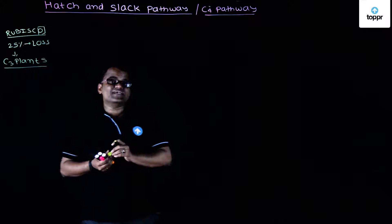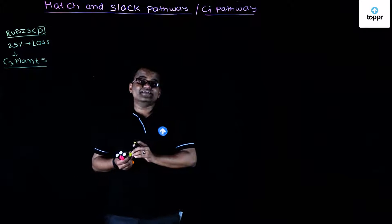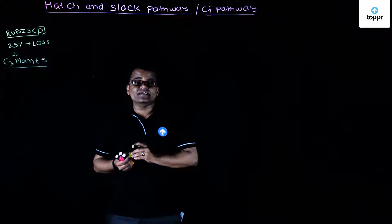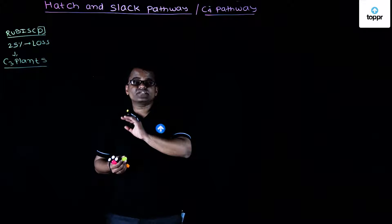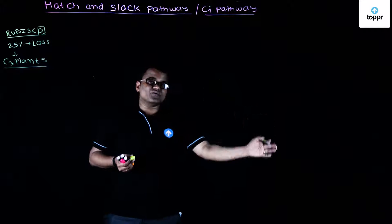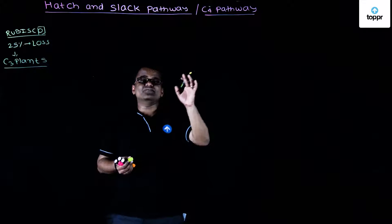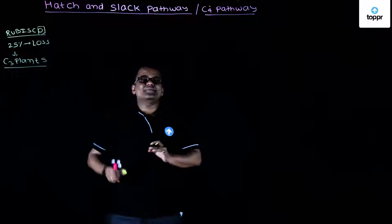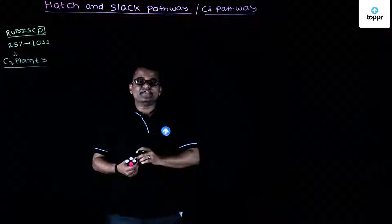C3 plants are those plants which fix carbon with the help of the C3 cycle — that is, the Calvin cycle — to convert carbon dioxide into glucose. Those plants are called C3 plants.